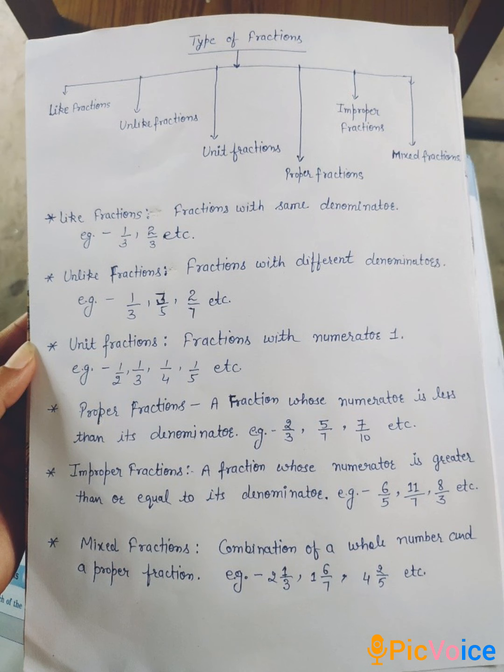Next, type unlike fraction. Fraction with different denominator. For example, one by three, three by five, two by seven, etc.